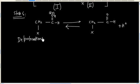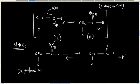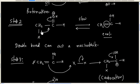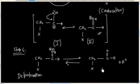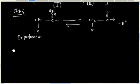So this is about alpha-halogenation in acidic medium. First we form the enol, and this enol attacks on the halogen to give a carbocation, and this carbocation can lose H⁺. Finally we will have the alpha-halogenated product. Generally, acidic medium alpha-halogenation gives better yield compared to basic medium alpha-halogenation.